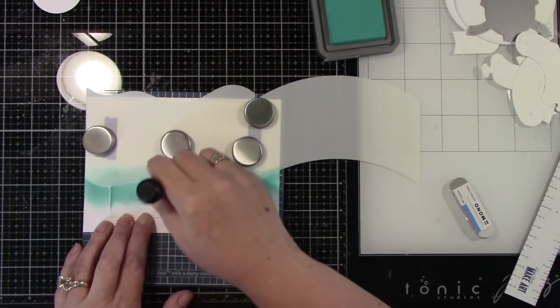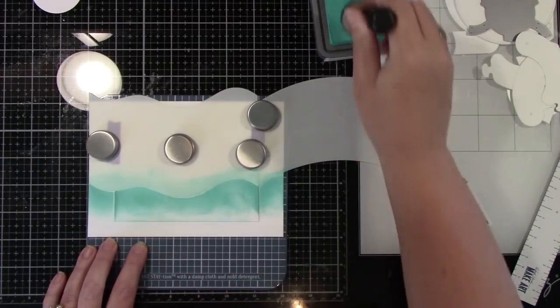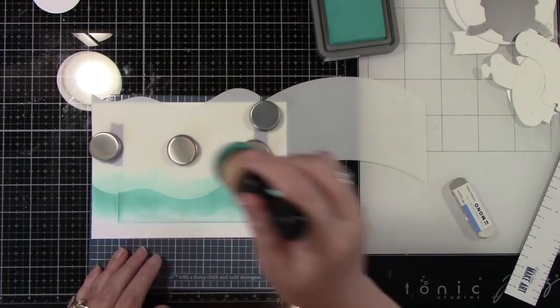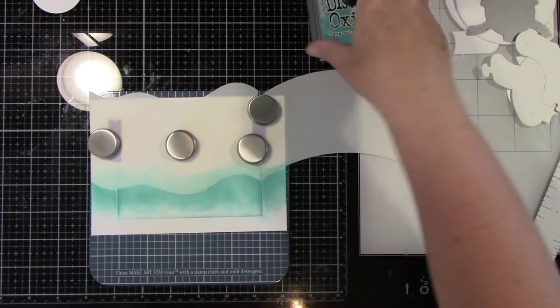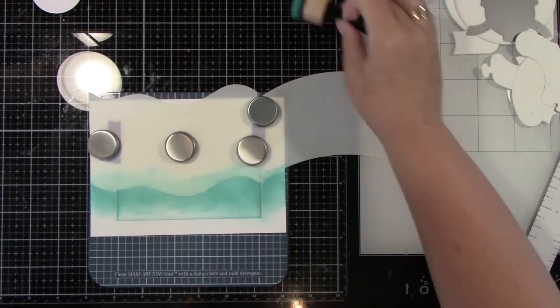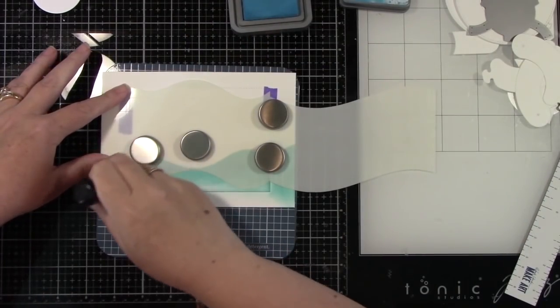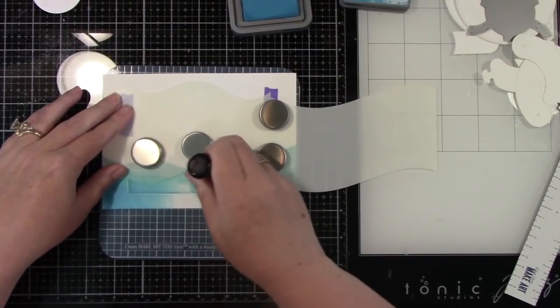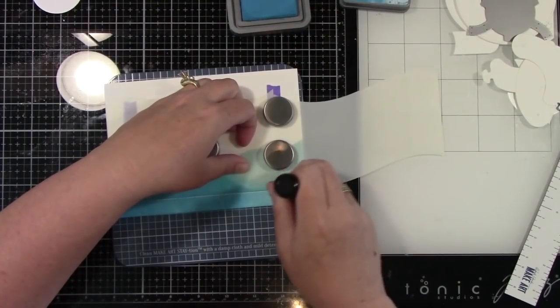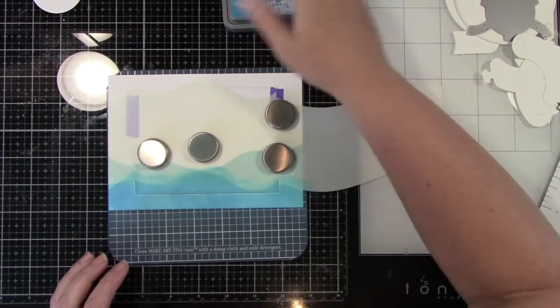I did add on a second stencil piece next to it because again, this is a five by seven card, so it's bigger than the stencils. So I just lined the stencils up together and I'm making the top part of the waves. Then I'm going to come in with the next color, which is Mermaid Lagoon. I'm going to move these stencils down and I'm going to have a second set of waves and I'm just going to blend this till I get a nice color that I want. I love these two ink colors. I think they're fantastic for ocean waves.